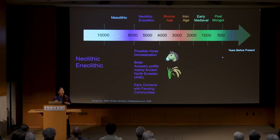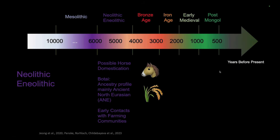I will give an overview of the various changes that happened from back in time to the present, trying to connect them to potential selective pressures. Going back to the Neolithic, around 5,000 to 6,000 years ago, we see some of the earliest individuals — some are hunter-gatherers, some are associated with possible horse domestication such as the Botai culture. They are known for having what is called the ancient North Eurasian ancestry profile.